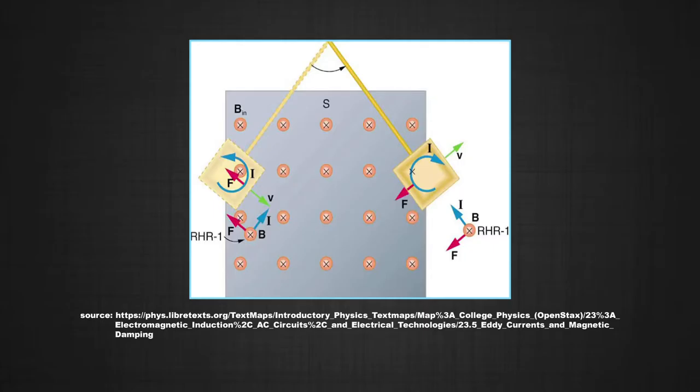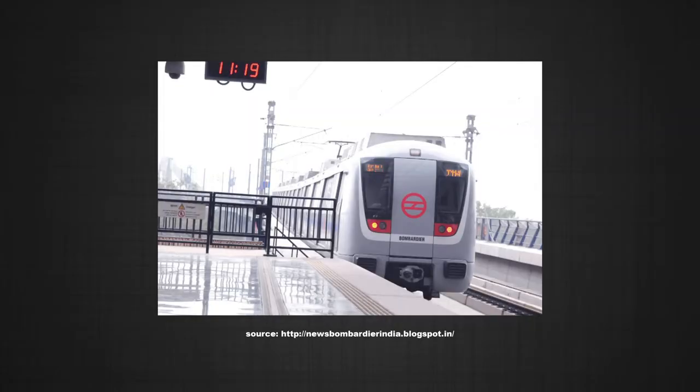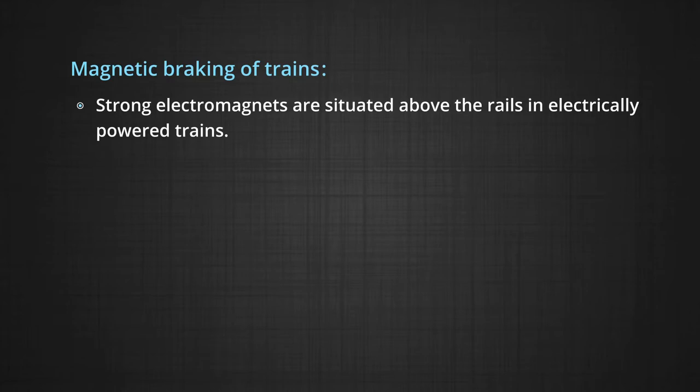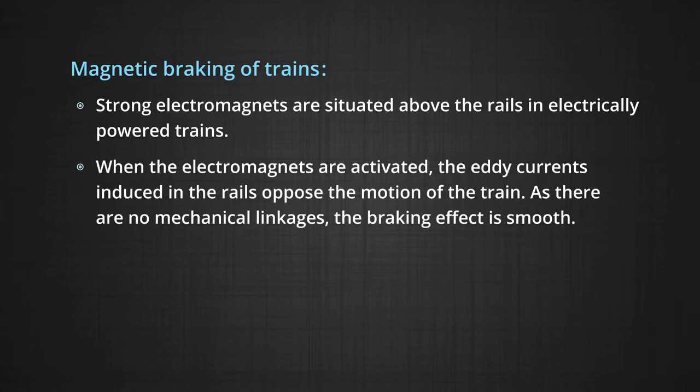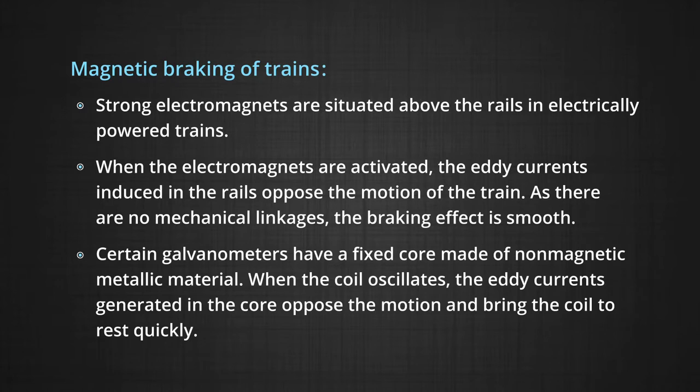You can take a look at the diagram. The electromagnetic braking finds its application in magnetic braking of trains. Strong electromagnets are situated above the rails in electrically powered trains. When the electromagnets are activated, the eddy currents induced in the rail oppose the motion of the train. As there are no mechanical linkages, the braking effect is smooth. Certain galvanometers have a fixed core made of non-magnetic metallic material.